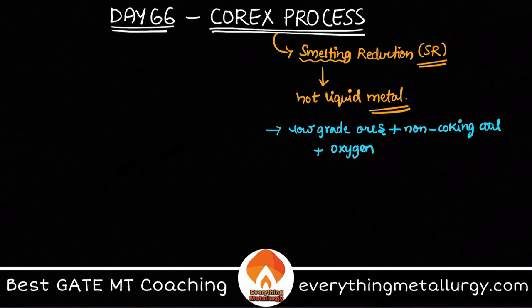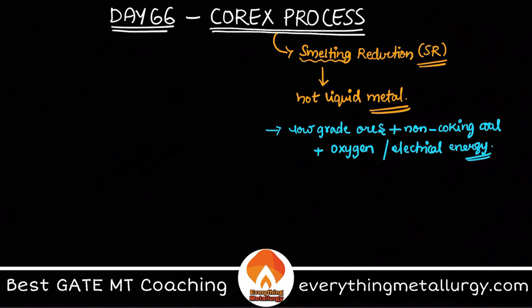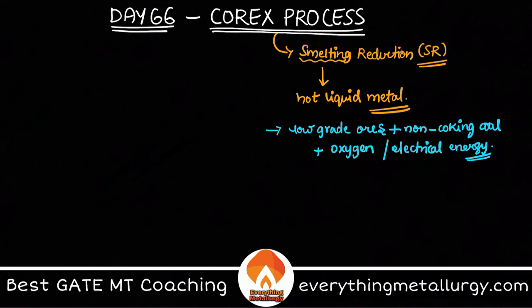In COREX, we use non-coking coal and inject 100% pure oxygen. Sometimes you may also provide an external source of energy like electrical energy — you can present an arc for it, though it is not mandatory. The coal and oxygen combustion gives the reducing agent CO as well as heat. So the feed materials are low-grade ores or waste materials, with non-coking coal as fuel and pure oxygen injection.